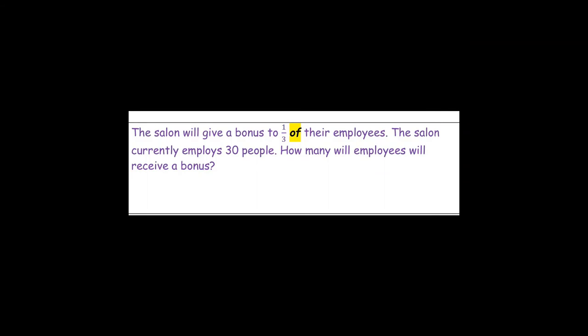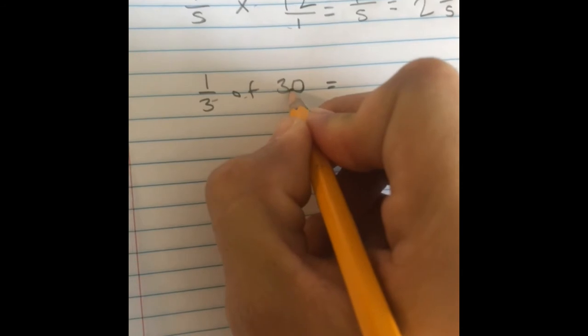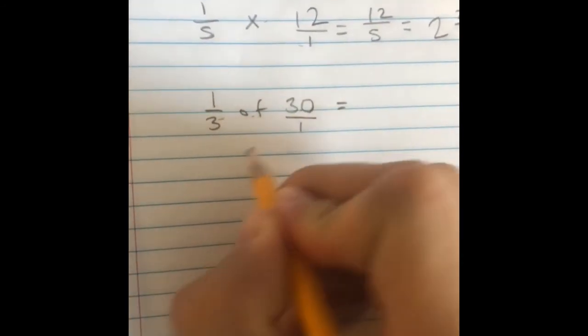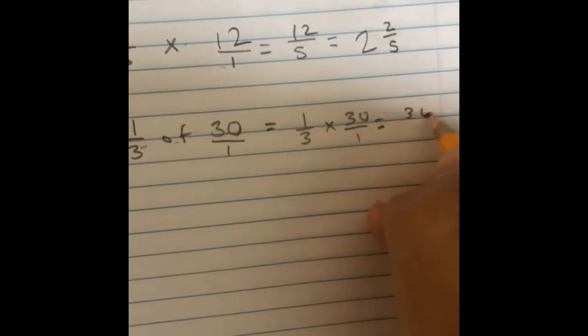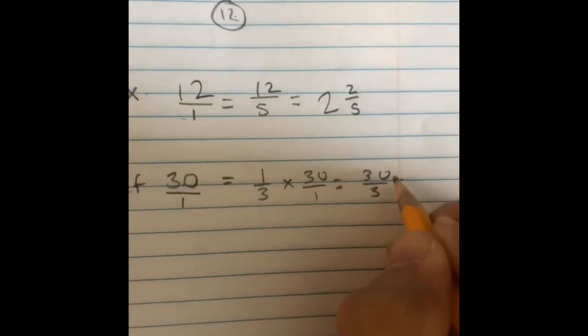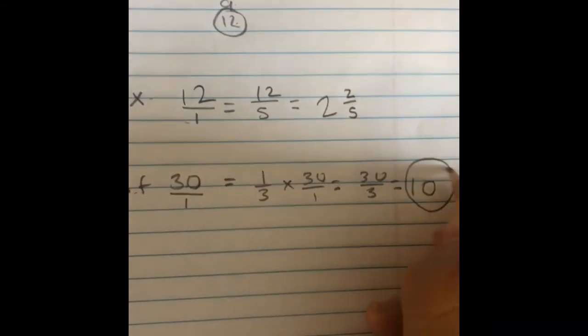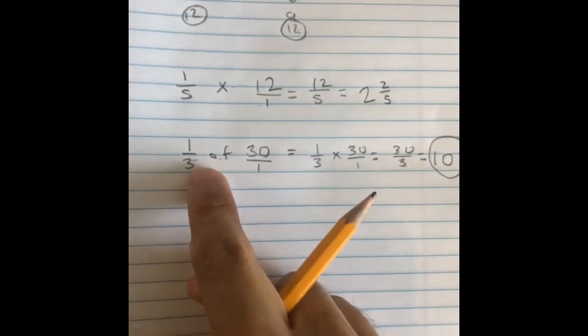The final problem said: the salon will give a bonus to one-third of their employees. The salon currently employs 30 people. How many employees will receive a bonus? Here you're finding a part of the whole. You can find what that quantity is by multiplying. You're finding one-third of 30 — so multiply one-third times 30, which equals thirty-thirds. Divide 30 by 3 to get 10. Ten people will get a bonus.